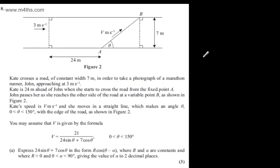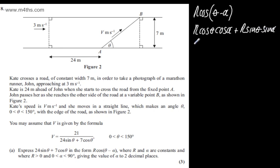So part A carries 3 marks. Let's go ahead and do that. We've got R cos of theta minus alpha. We can use the identity and this is R cos theta cos alpha and then we're going to have plus R sine theta sine alpha. So equating coefficients, we can see that R sine alpha is going to be equal to 24 and we can see that R cos alpha is going to be equal to 7.